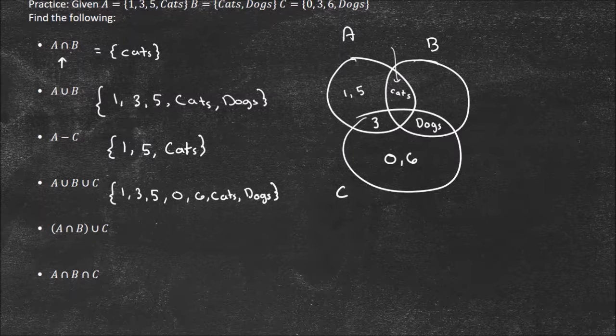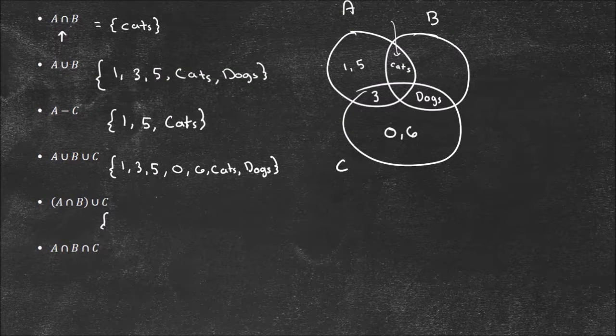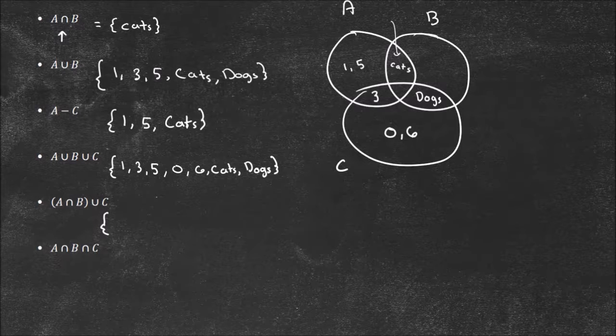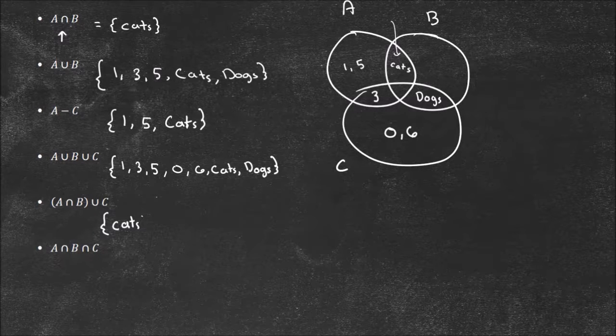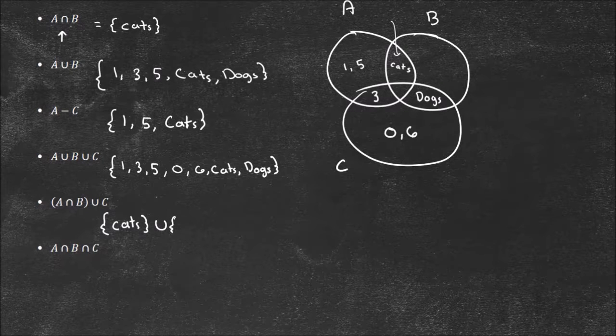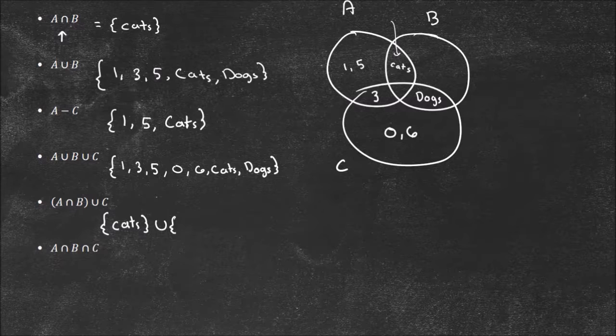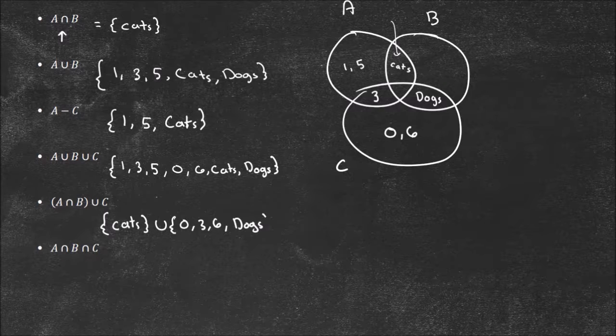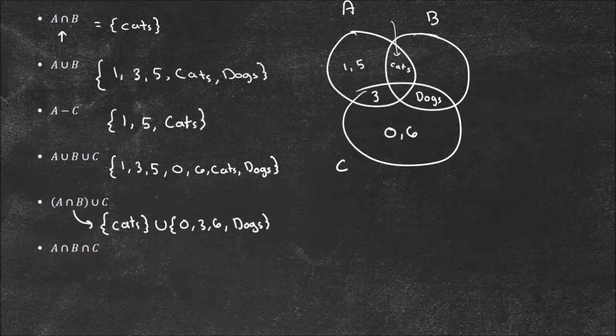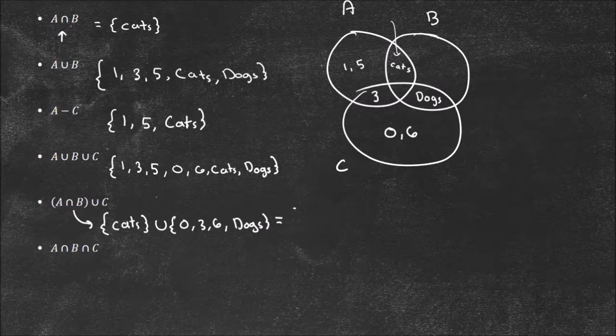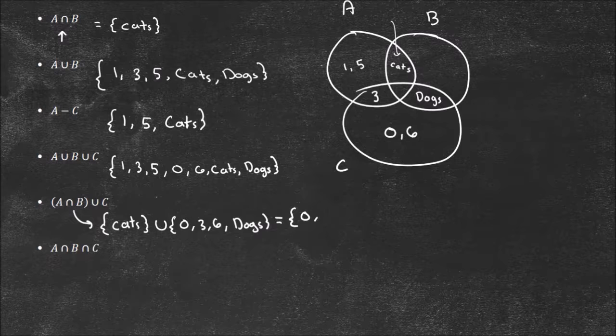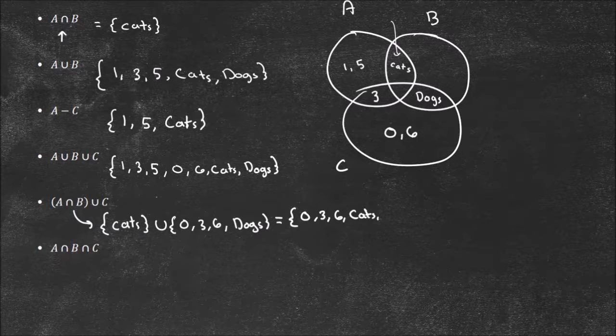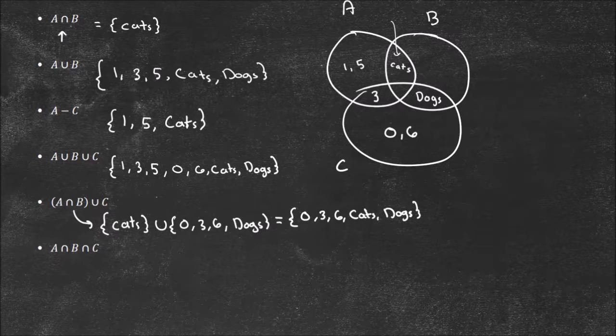All right, so now we've got to be careful. What's A and B or C? So I kind of like to work with this one inside out. I like to simplify everything. So A or B, A and B, I mean. Well, we already have that one. That's just cats. So it's cats or C. And what's inside of C, which is the 0, 3, 6, and dogs. Now it's a more basic question. We have to simplify this one first. So that's that A and B. And then now I'm saying or C. And now that's going to equal just everything inside of either one of those, which is 0, 3, 6, cats, and dogs. So we just have to do what's in parentheses first and then worry about the or.